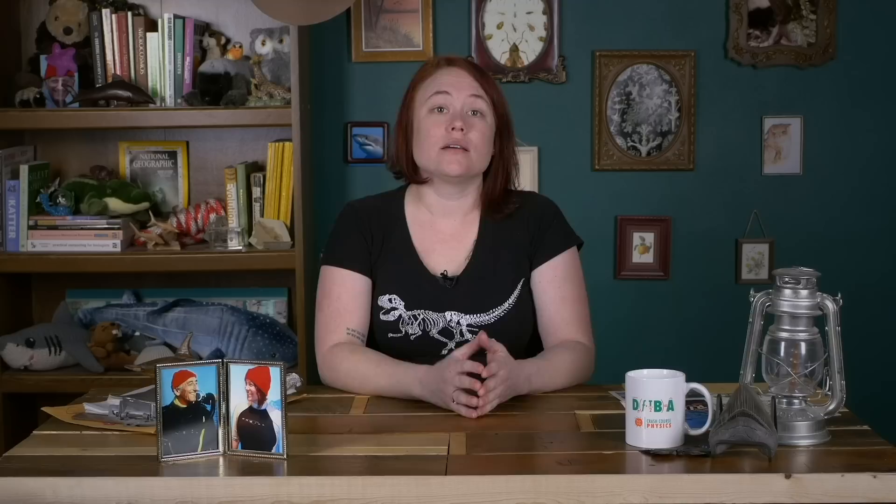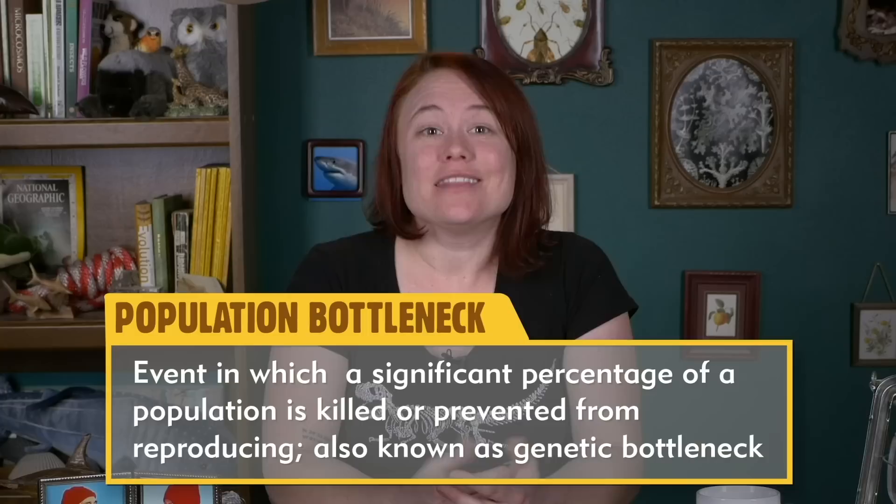Another concept within the realm of extinction is the idea of a population or genetic bottleneck. This is when a significant percentage of a population is killed or prevented from reproducing — some definitions say when a population is reduced by 50% or more. With genetic bottlenecks, you can have increases in inbreeding due to a reduced pool of possible mates. If traits that are harmful to individuals wind up persisting, this can lead to an increased chance of extinction.